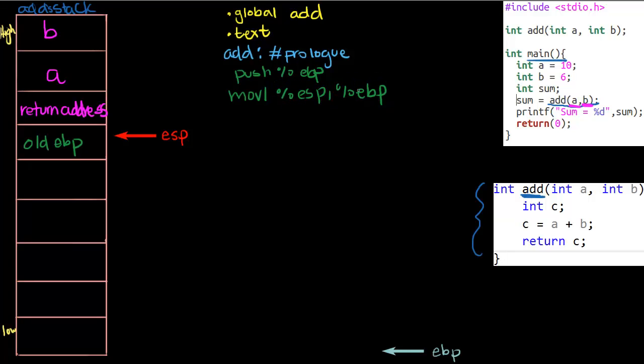We're basically moving the value, copying the value of ESP into EBP, and that just means EBP will point to the same thing that ESP is pointing to. EBP will be pointing to the same thing that ESP is pointing to.